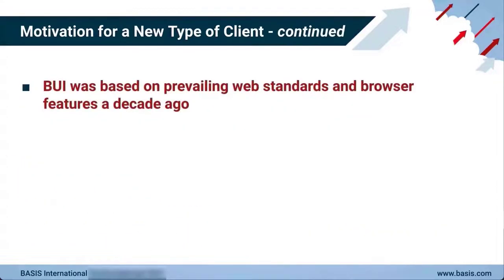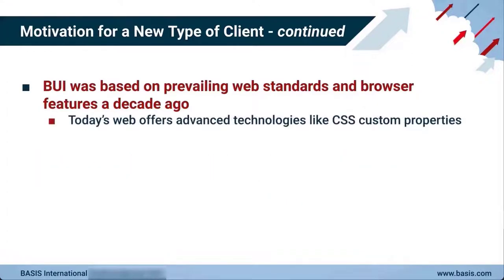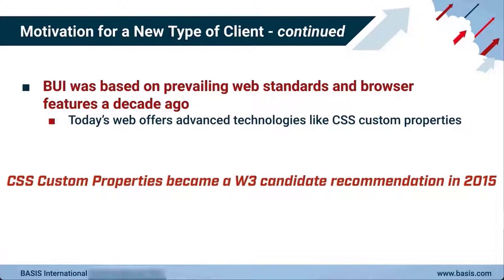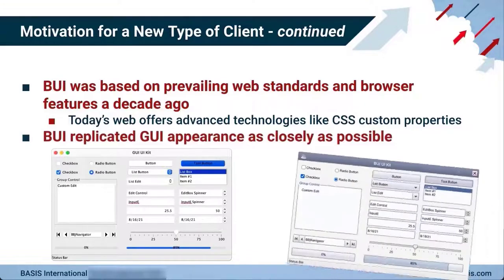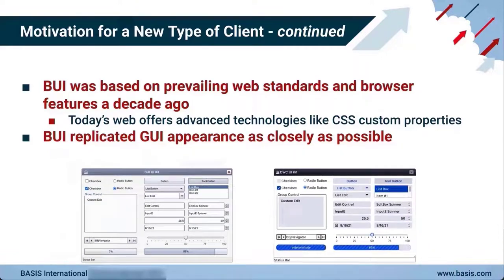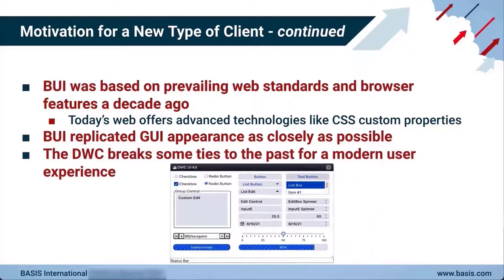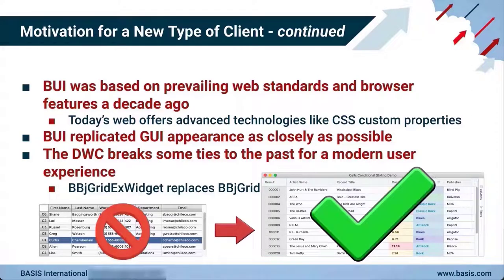Basis designed BUI over a decade ago, based on the prevailing web standards and browser features from that era. But the web in 2021 is a dramatically different place than it was in 2009, as it offers advanced technologies like CSS custom properties that just weren't available when we first designed BUI. Basis had an explicit goal for BUI to replicate as closely as possible its GUI appearance in the browser, but in the DWC there are areas where we've purposely broken ties with the past in order to provide a modern user experience, such as abandoning the old BBJ Grid in favor of the JavaScript BBJ Grid EX widget.